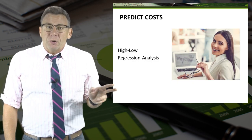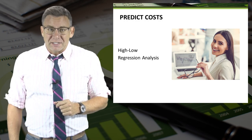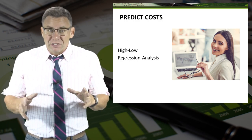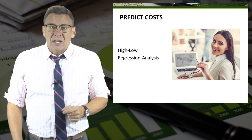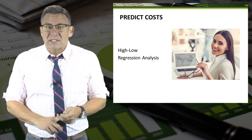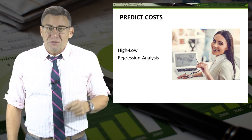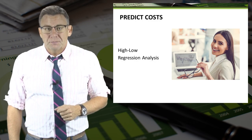There are two primary methods used to predict costs at various levels of volume by using the data from a scatter plot. They are the high-low and regression analysis methods. The following two videos will demonstrate each.